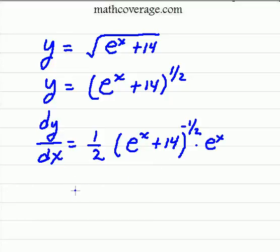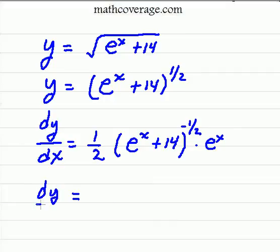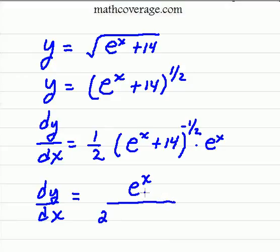So now what we want to do is rewrite this once again. We take the negative one-half and move it to the bottom, and so we're left with dy over dx is equal to e to the x. And I'm going to rewrite this back in radical form: e to the x over the square root of e to the x plus 14.